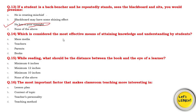Question number 14: Which is considered the most effective means of attaining knowledge and understanding by students? Options include mass media, teachers, parents, or books. Books are a big and effective tool for learning, which students can use to learn themselves while reading.